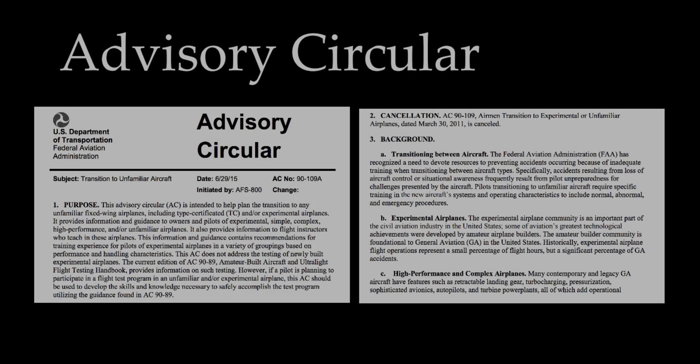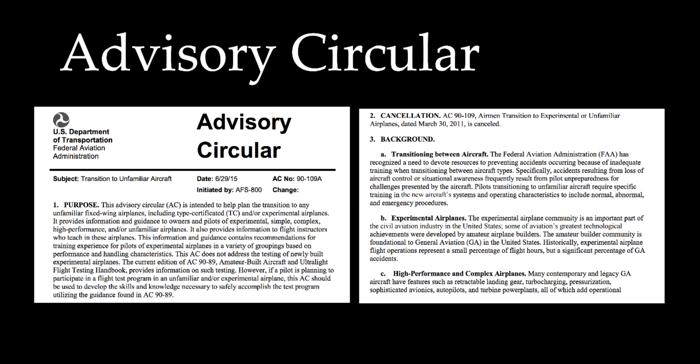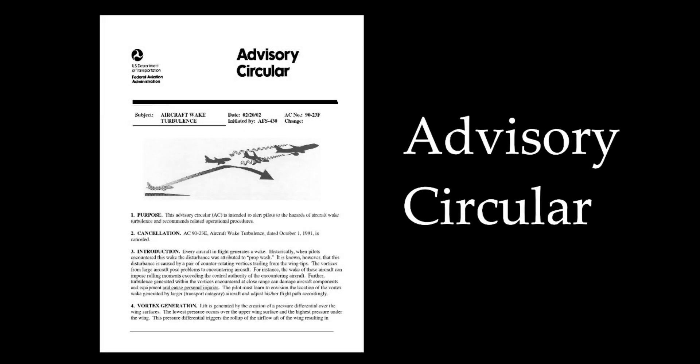Here's an example of an Advisory Circular. These provide advice and guidance to explain particular regulatory requirements. In reading an Advisory Circular, the first part of the number identifies the subject matter area of the AC and corresponds to the appropriate 14 CFR part. For example, an AC on certification of pilots and flight and ground instructors is numbered AC 61-65E.